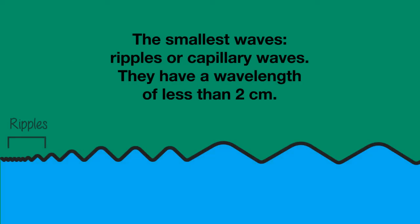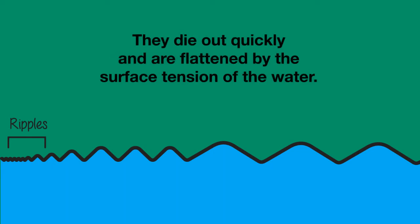The smallest waves are called ripples, or more scientifically, capillary waves. They have a wavelength of less than two centimetres. They die out quickly when the wind stops and they are flattened by the surface tension of the water.